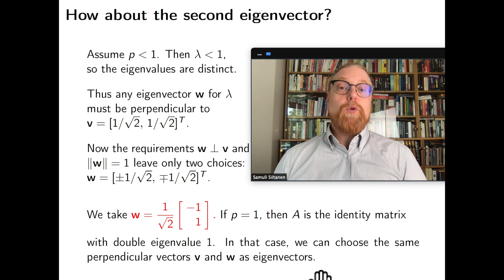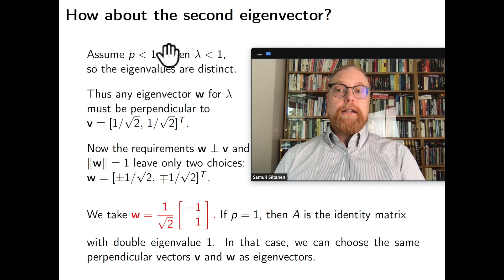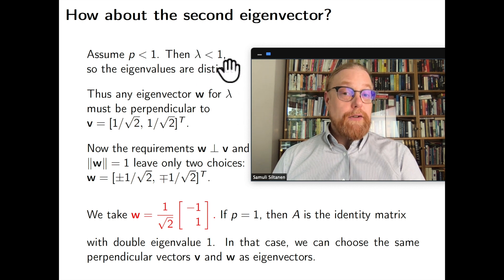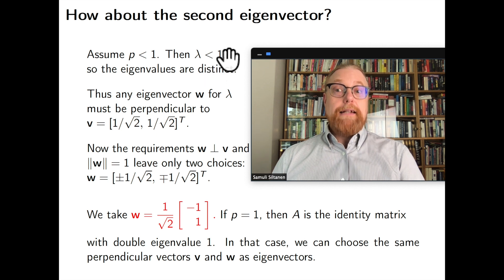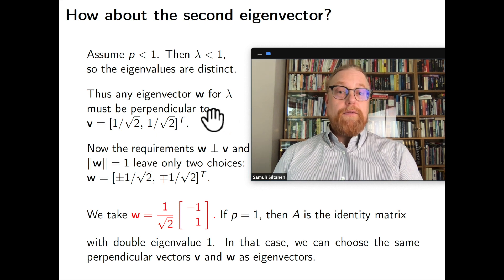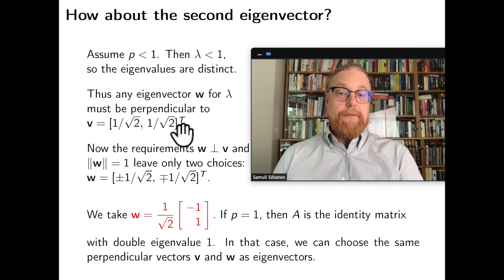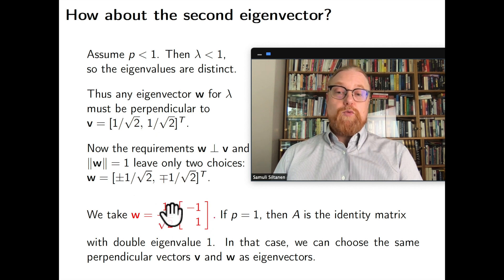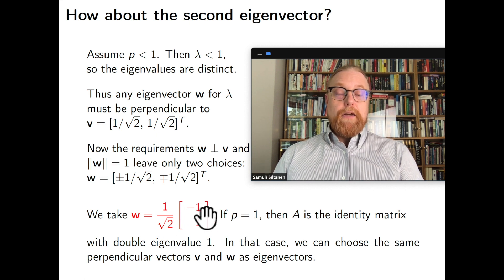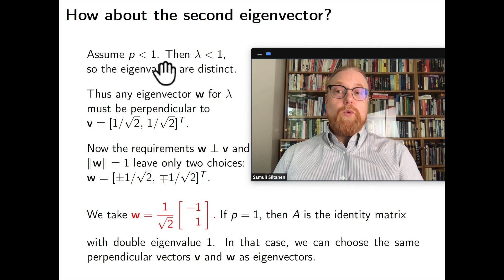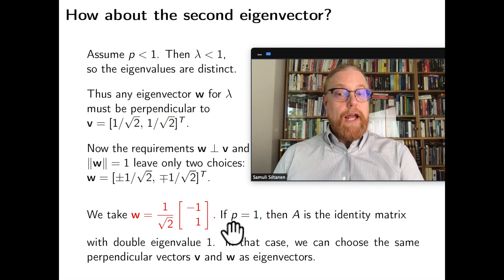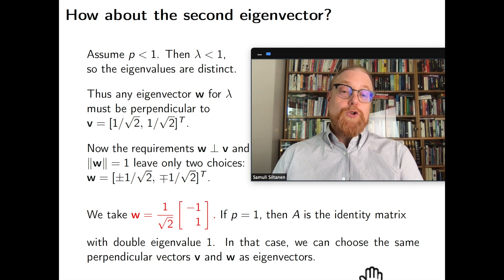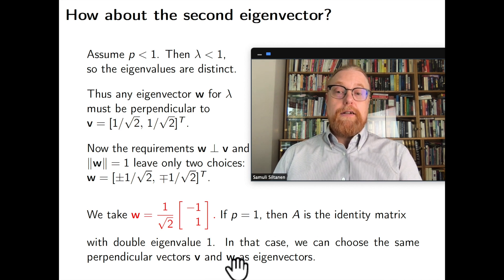So we have the second eigenvalue. But what about its eigenvector? So two cases. First of all, let's think that p is less than one. In that case, lambda is also smaller than one. So it's different from our from the other eigenvalue, which is one. In that case, we know from linear algebra that the other eigenvector must be perpendicular to the first eigenvector we have. So there is not much choice anymore left. There are these two choices we can take. And let's just take this one for our second eigenvector. However, the case p equals one is very simple. Then A is just the identity matrix. And it has twice the eigenvalue of one. And actually we can use the same eigenvectors we saw before.